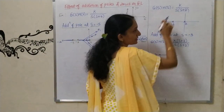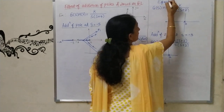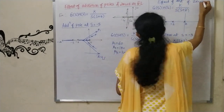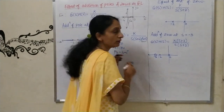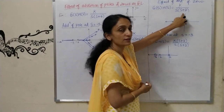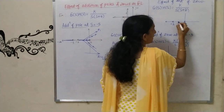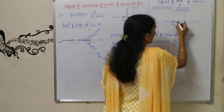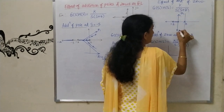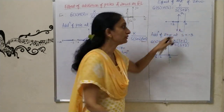Now I will see the effect of addition of zero. I have taken the same example: G(s)H(s) = K / (s(s+2)) — two real poles. I will get two asymptotes with the centroid here, and the root locus will be parallel to the j-omega axis with β₁ and β₂ at 90° and 270°.